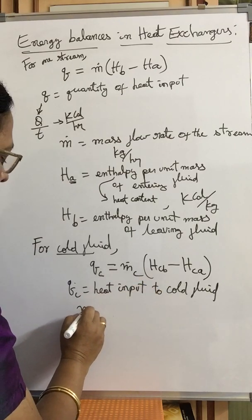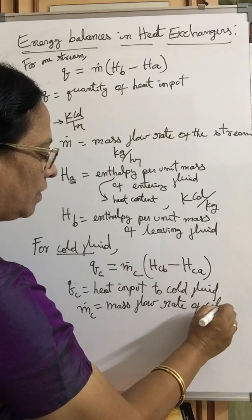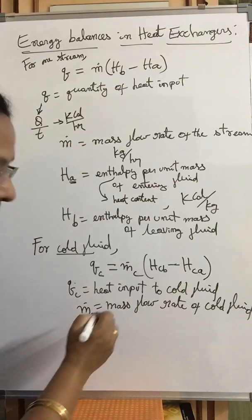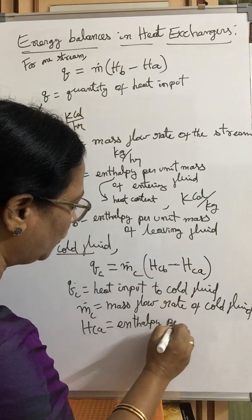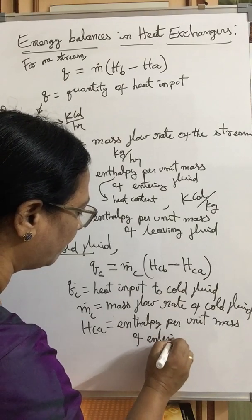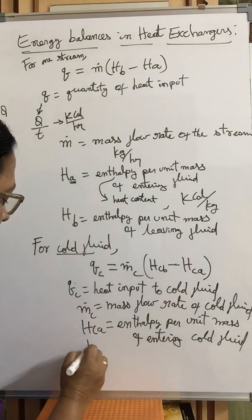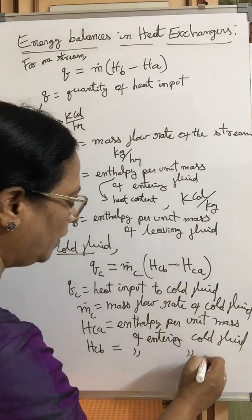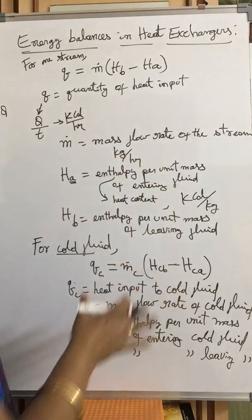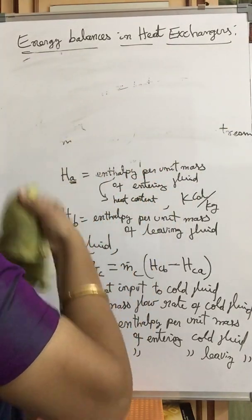Ṁ dot C is the mass flow rate of the cold fluid. HCA is the enthalpy per unit mass of the entering cold fluid. HCB is the enthalpy per unit mass of the leaving cold fluid. So this is the heat input to the cold fluid.